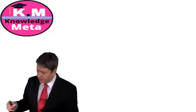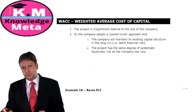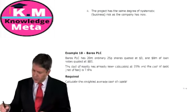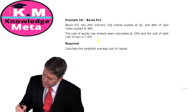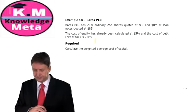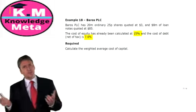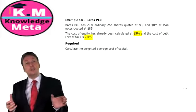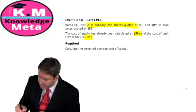Now let's look at the weighted average cost of capital — the WACC. We'll see in a moment when we can use it and what it's used for, but first let's go straight to an example. Barros has 20 million ordinary 25p shares quoted at $3, and $8 million worth of loan notes quoted at $85. The cost of equity is 15% and the cost of debt is 7.6% net of tax.